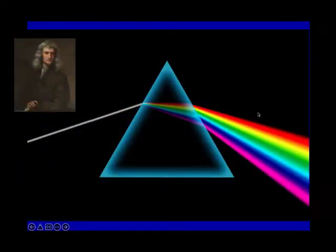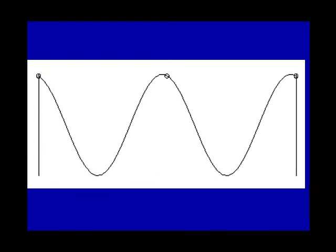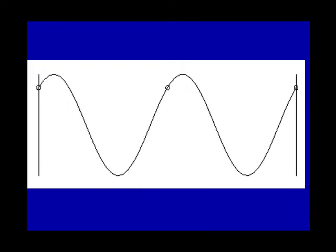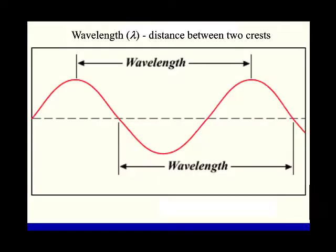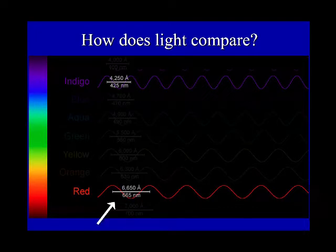Isaac Newton discovered that sunlight passed through a prism produces a rainbow. Because light creates patterns like this, light is described as traveling in waves. The rainbow is produced because each color has a different wavelength. Red light has a longer wavelength than blue light. The wavelength is the distance between two successive peaks, measured in billionths of a meter. The difference between red and blue light is only the wavelength — red light is 665 nanometers and blue light is 425 nanometers.